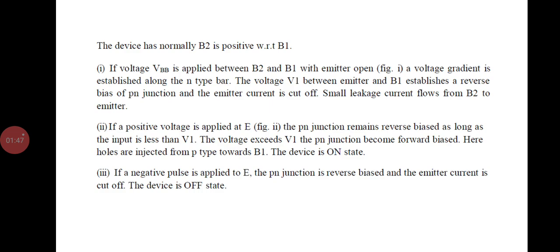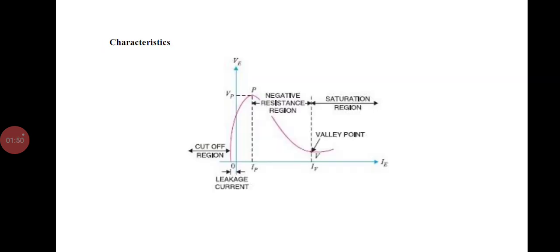This is the VI characteristics of the UJT. In the cutoff region, VE increases from zero and a slight leakage current flows from terminal B2 to the emitter. As VE increases, forward emitter current IE begins to flow, increasing until the peak voltage VP and current IP are reached at point P. After the peak point P, an attempt to increase VE is followed by a sudden increase in emitter current IE with a corresponding decrease in VE. This is the negative resistance portion of the curve where IE increases and VE decreases.